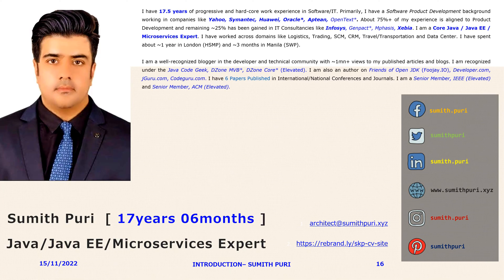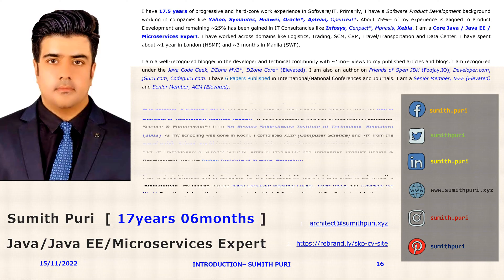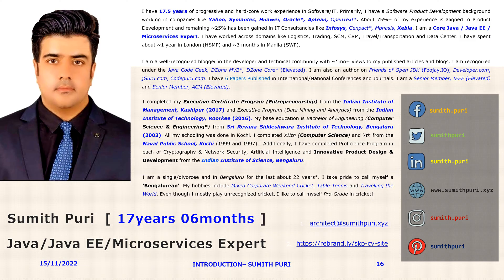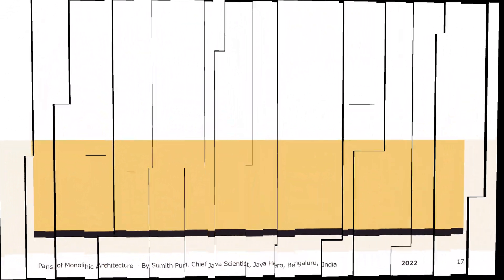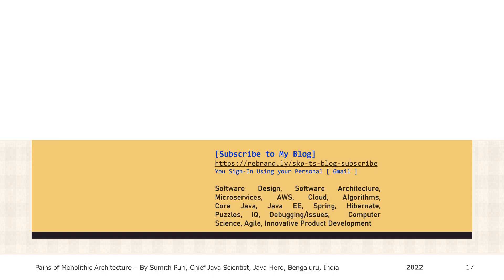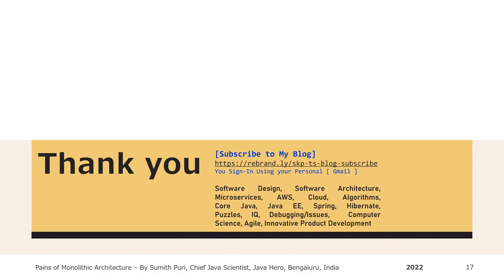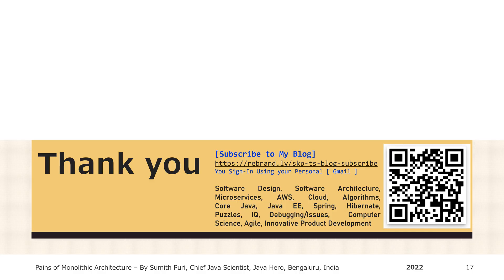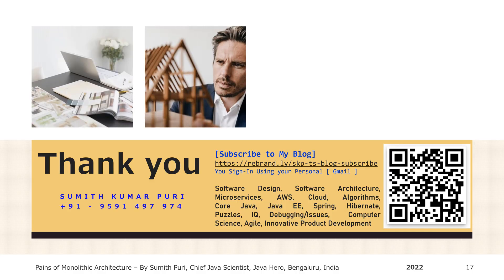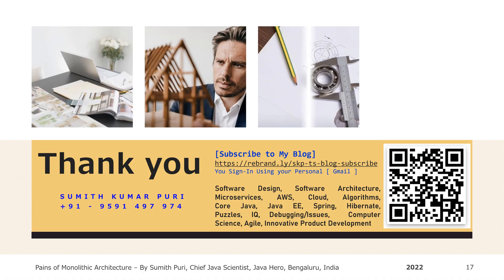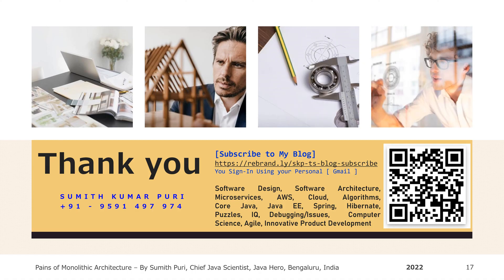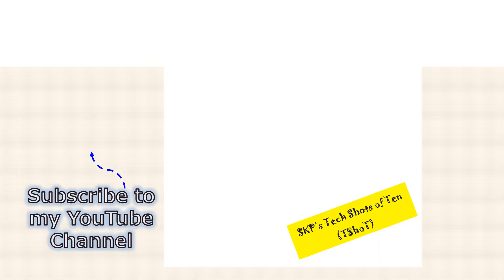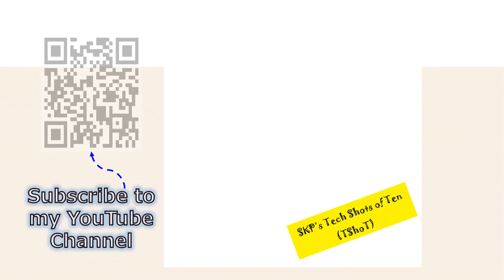You will find a lot of technical articles there on Kafka, J2EE, Microservices, Algorithms, Software Design and Architecture. Before I end this T-Shot, I will leave you with a Japanese proverb — Wabi Sabi. The English meaning of this proverb is: nothing lasts, nothing is finished, nothing is perfect. Thank you.